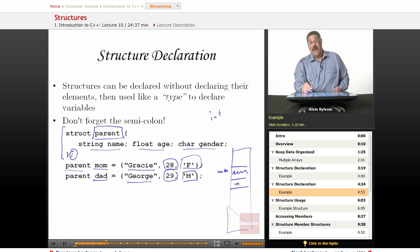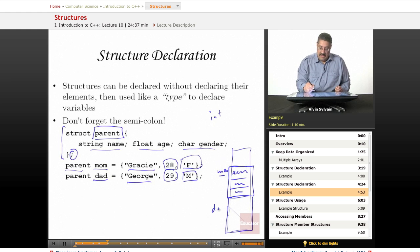In memory somewhere we've got mom who has a string with her name, a float for her age, and a char for her gender. This chunk of memory has been allocated for mom, and a similar chunk of memory has been allocated for dad.